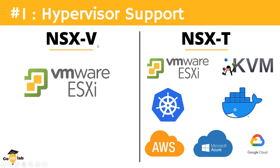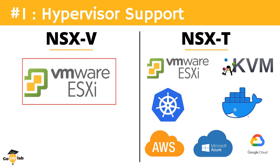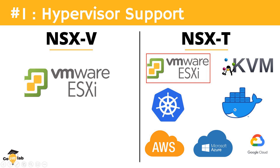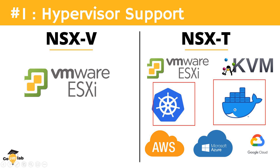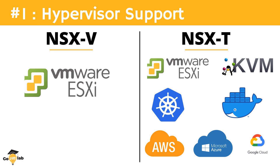The very first point is about hypervisor support. NSX-V itself stands for NSX for vSphere, meaning NSX-V was only supporting VMware ESXi hypervisor and was only compatible with the VMware vSphere environment. But NSX-T not only supports VMware ESXi hypervisor, but also has support for KVM hypervisor, supporting a wide range of operating systems such as RHEL, Ubuntu, CentOS, and other flavors. NSX-T also has support for Kubernetes and the container ecosystem, which was not there in the NSX-V environment.